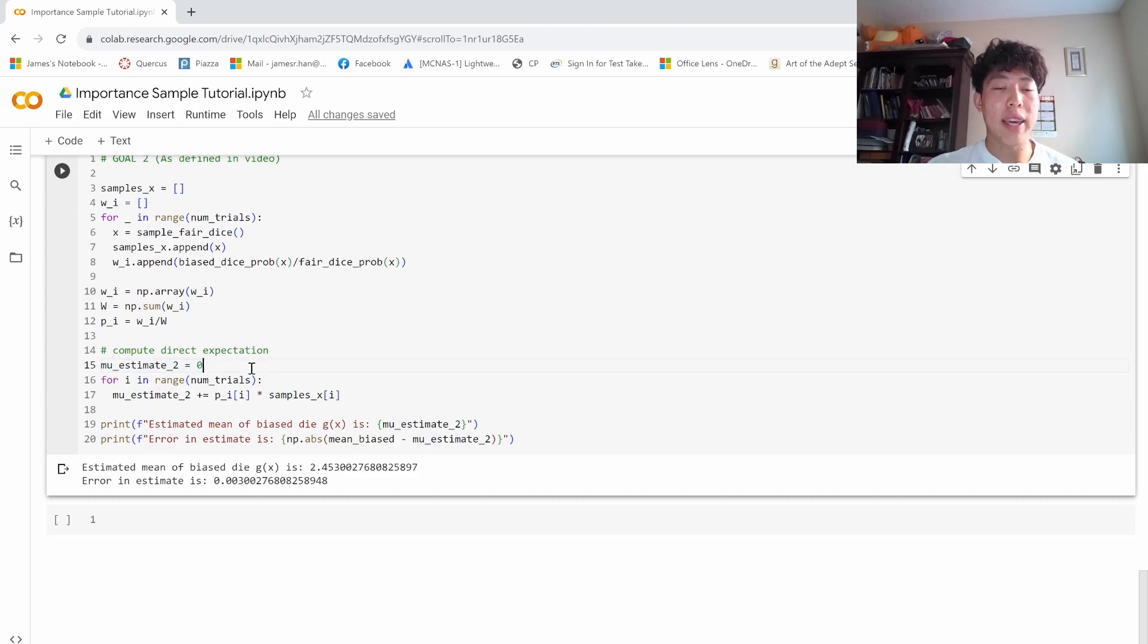So under our second estimate, again, we can calculate the direct expected value using this probability distribution. So here we have pi, so the probability of this event, multiplied by what the event actually was, and we can see that we also get a very very good approximation.